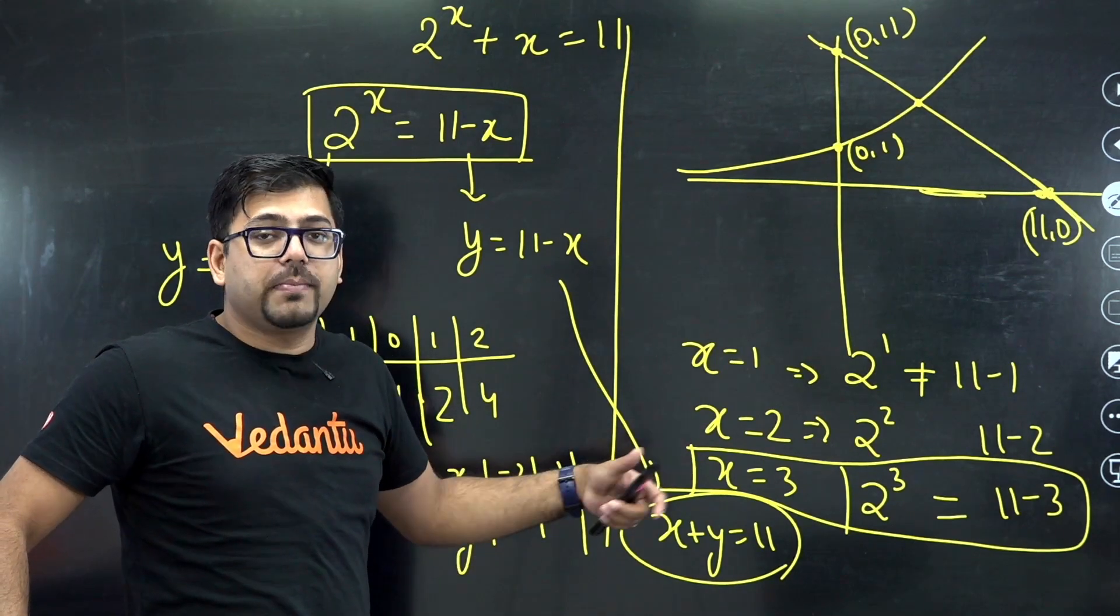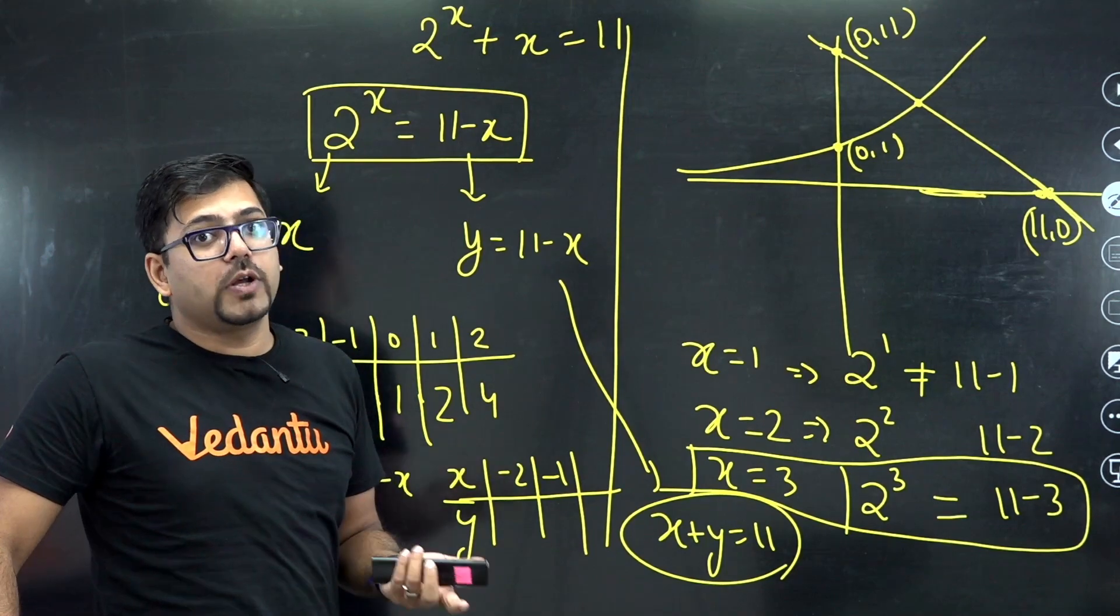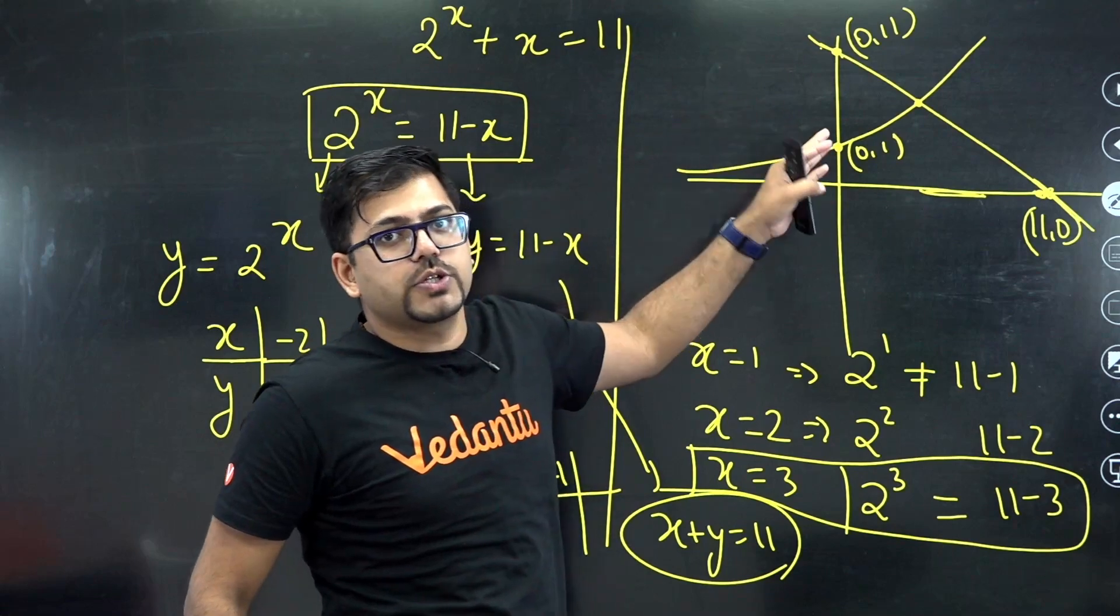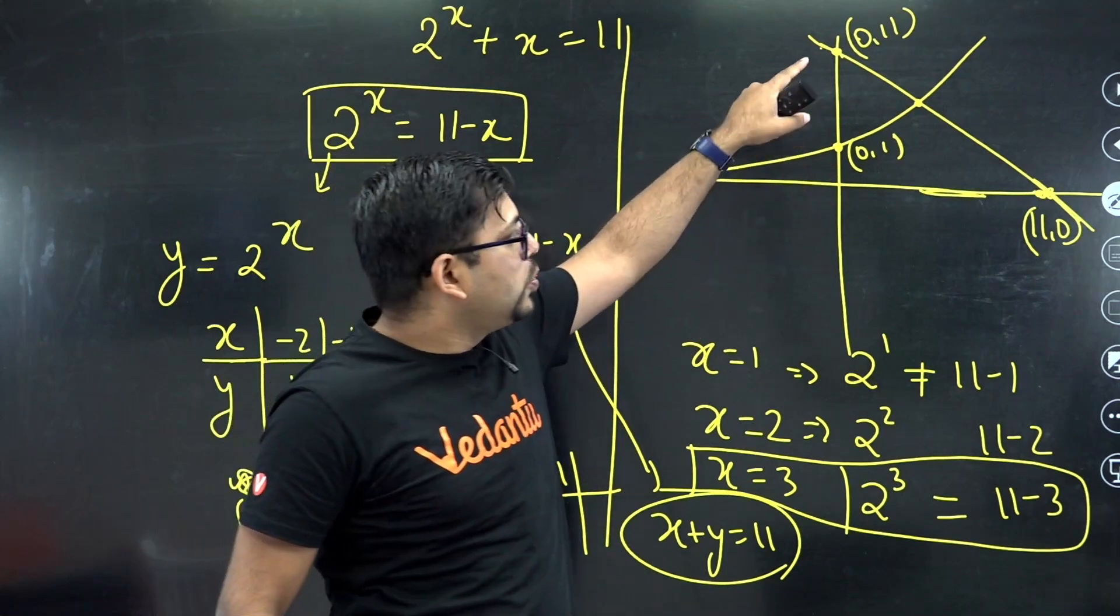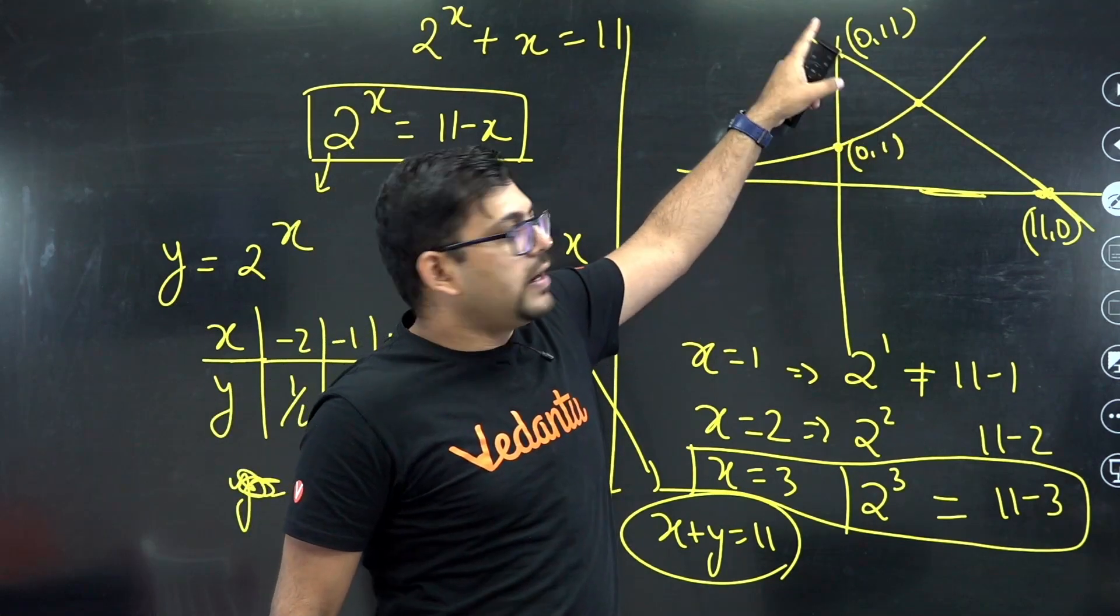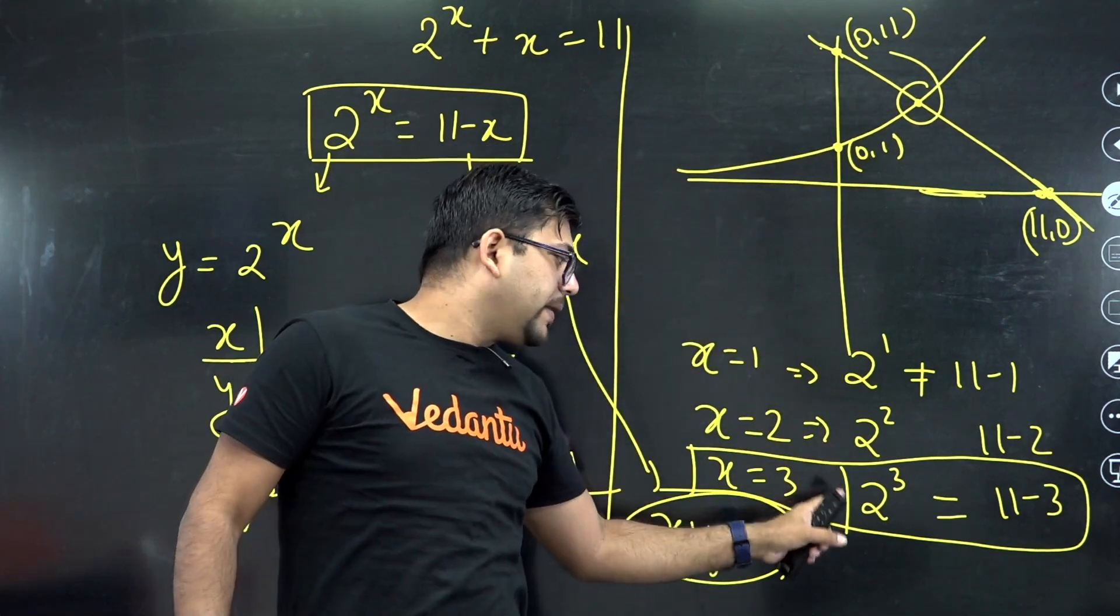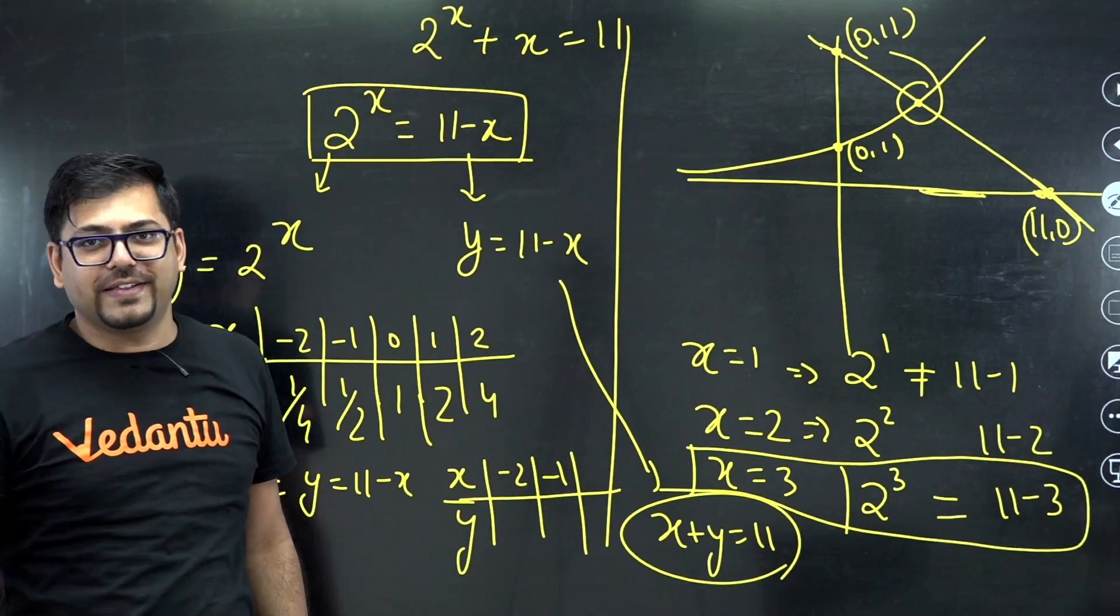Because x equals 3 might be one of the solutions, might not be all the solutions. So for ascertaining whether this question has only one solution or more than one solution, you needed this graph. This graph is confirming that only one intersection is there, so only one solution. By hit and trial, that solution is x equals 3, and hence we have got the answer.